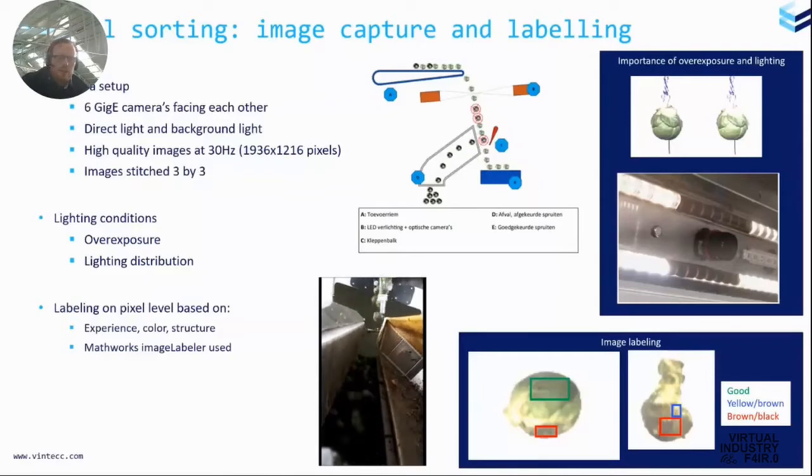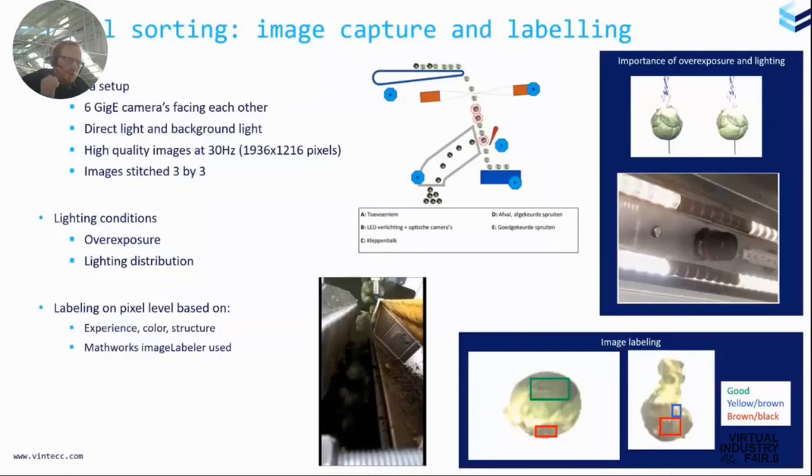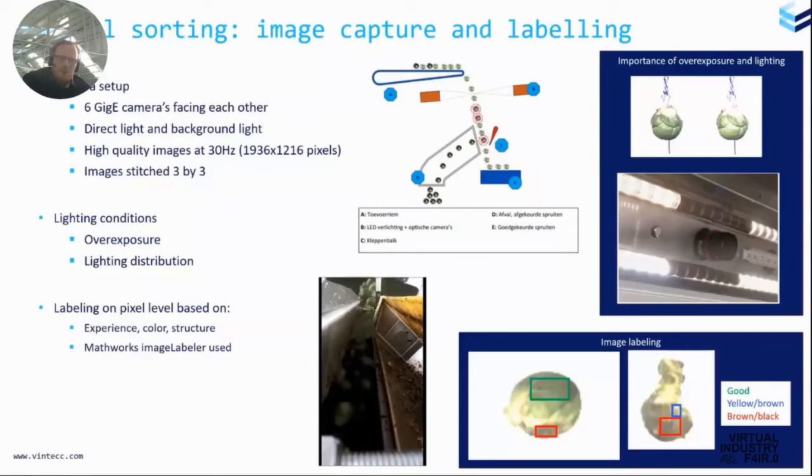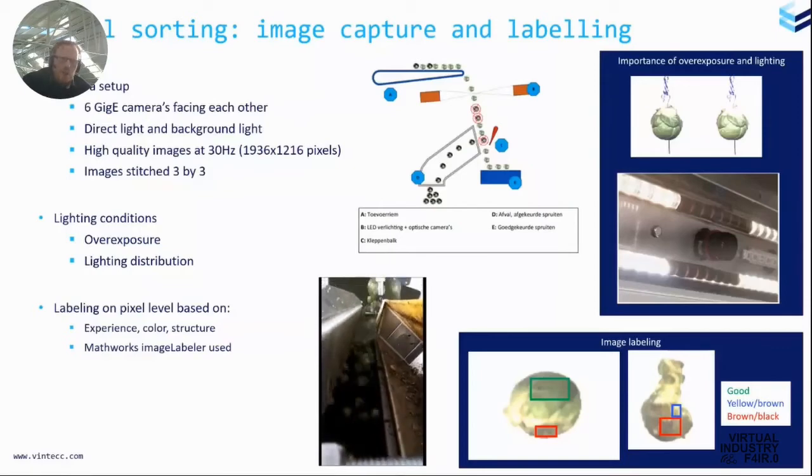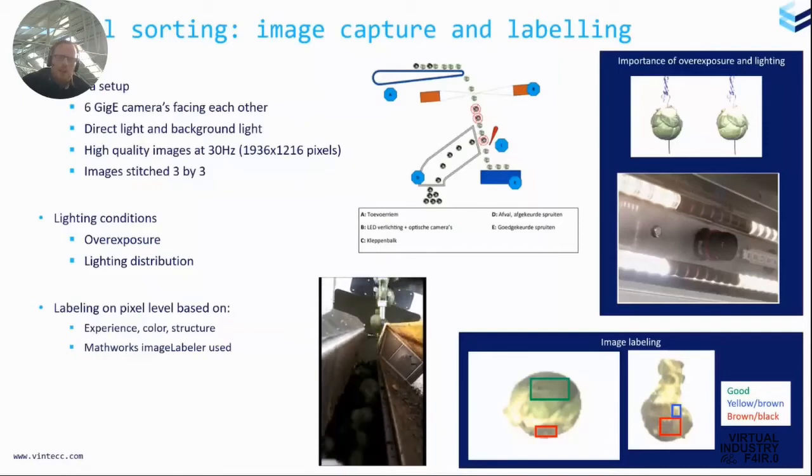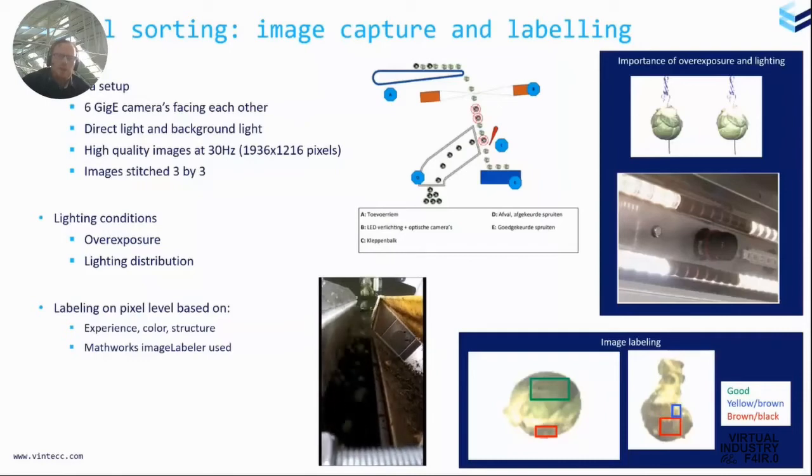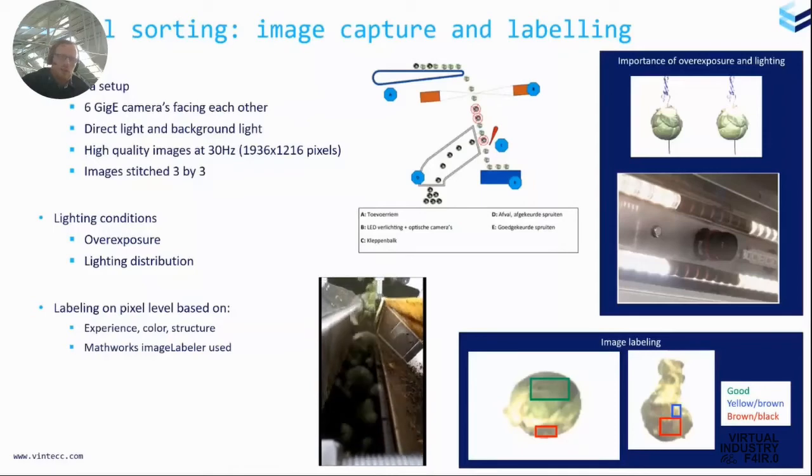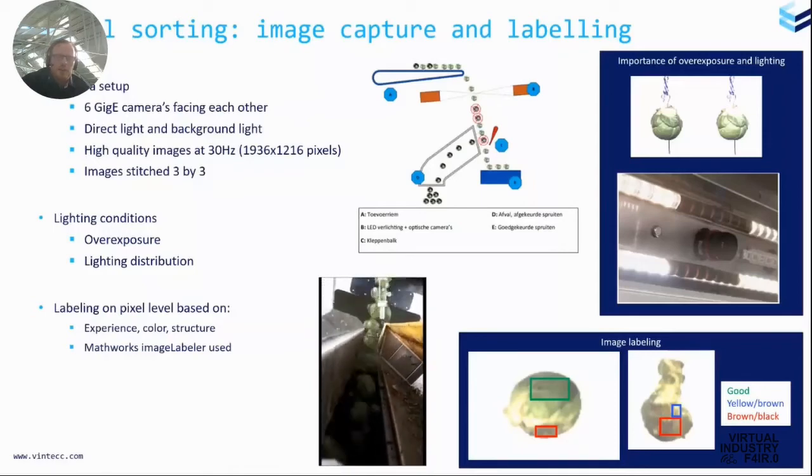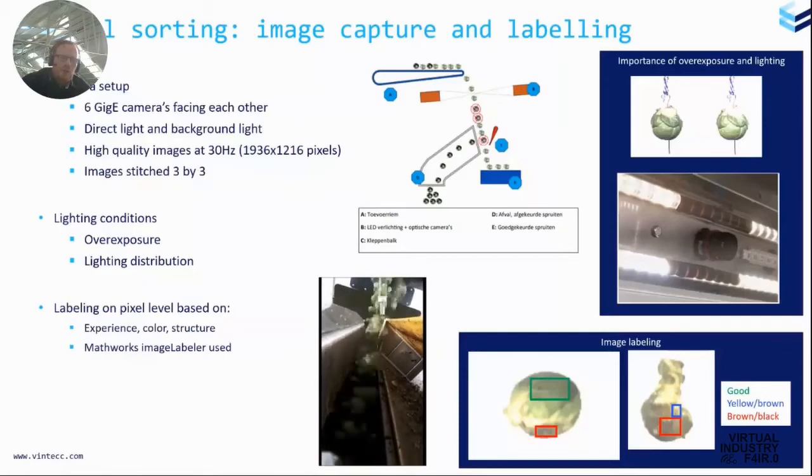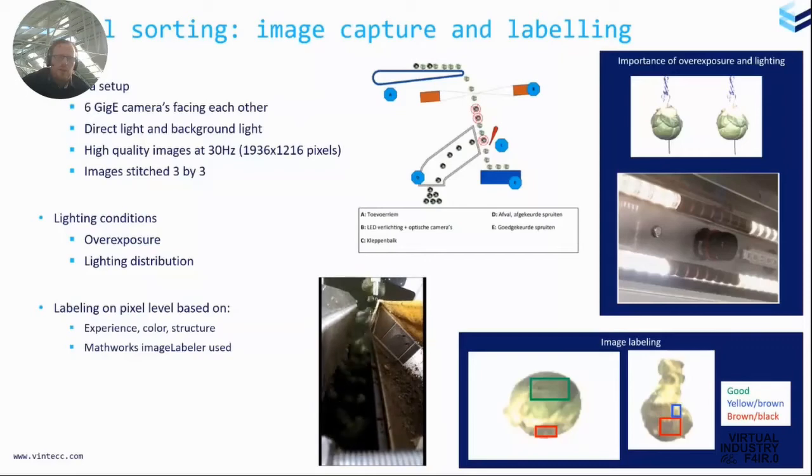And also on a very big rate of material that's passing by. So what do we need? We need good images and therefore the lighting and the exposure of the cameras and also the lighting is very very important. So we did a good study about that. So you see there two pictures of brussels sprouts. One is lighted too much, the other one is good. So when that is not correct, you have different information or wrong information or your pictures are just not good to be labeled.